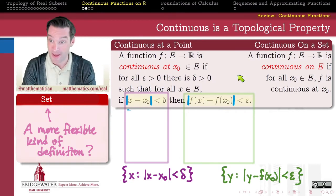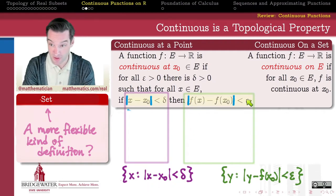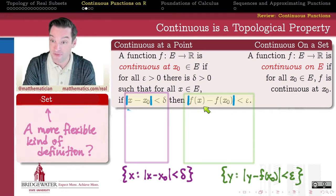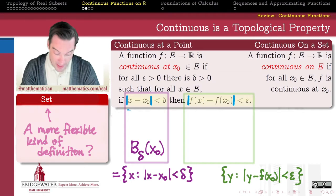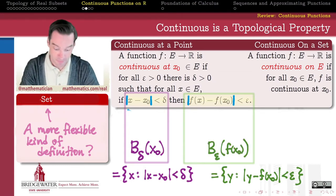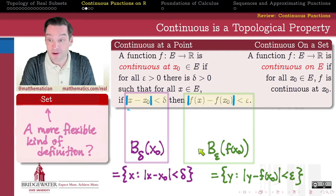The good news is we have the language to do that. We're speaking of the x-values that are within delta distance of x₀ — that is, members of the set of all points on the real line for which |x − x₀| < δ. And similarly, we're speaking of all real numbers f(x) within epsilon distance of f(x₀) — those for which |f(x) − f(x₀)| < ε. But these are just the open neighborhoods around x₀ and f(x₀), respectively, with radius delta and epsilon respectively.